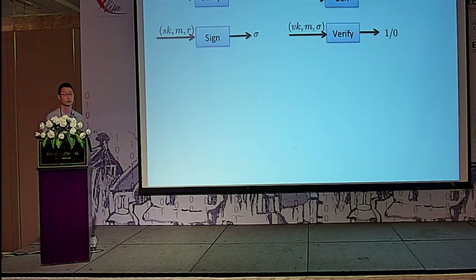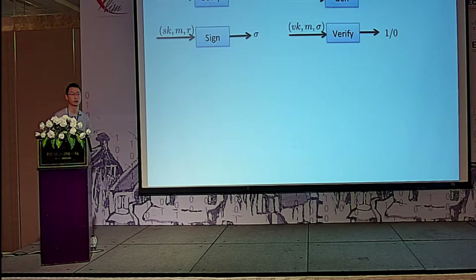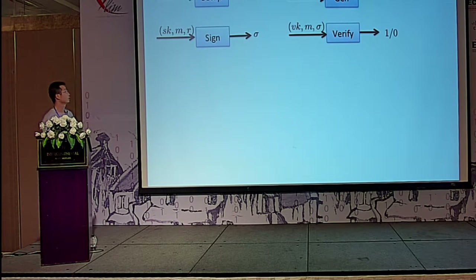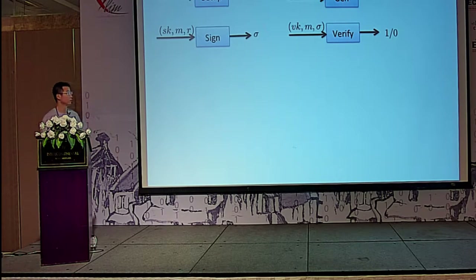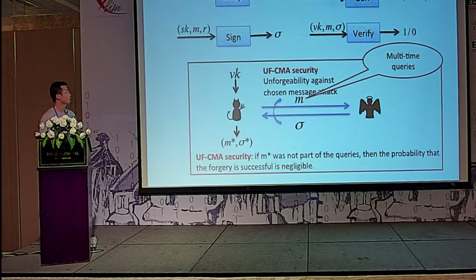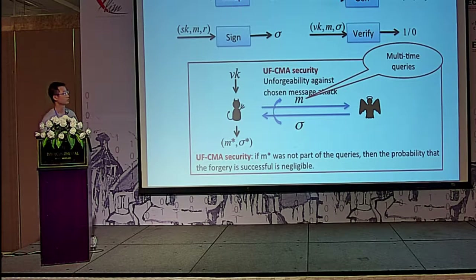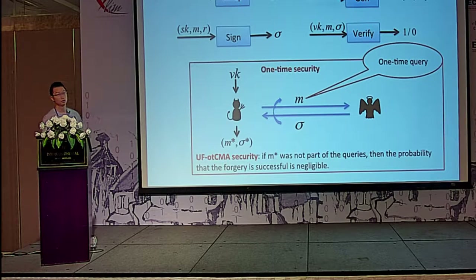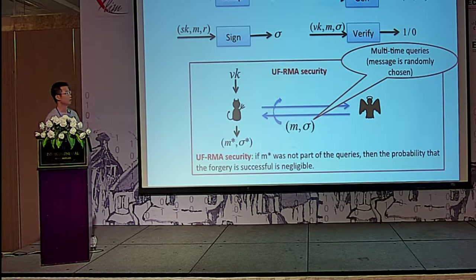I'll introduce the signature schemes. As you know, in the signature scheme, the signer has the signing key SK and the verifier has the verification key VK. By making use of SK, the signer can send messages, and by making use of VK, the verifier can check if the signature is correctly generated. There are several standard security definitions for signatures, such as UF-CMA security, one-time CMA security, and RMA security.